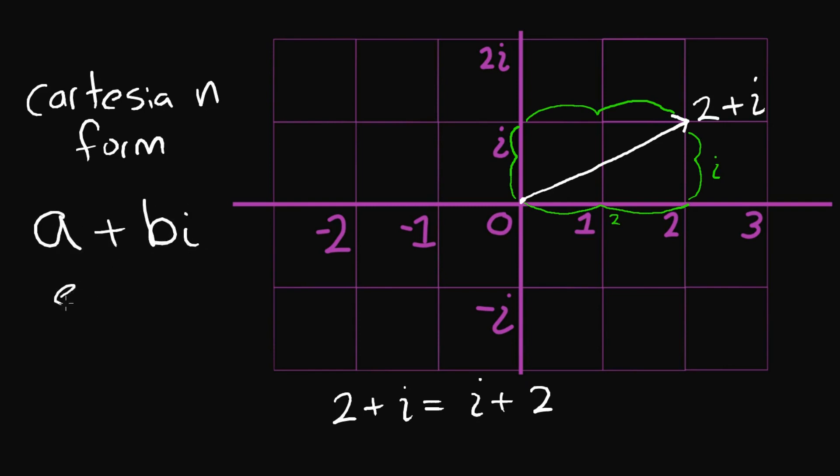For example, we could have numbers like 3 minus 7i, 8 plus the square root of 2i, anything like this. This is all called Cartesian form.